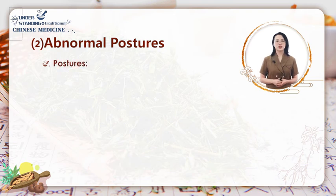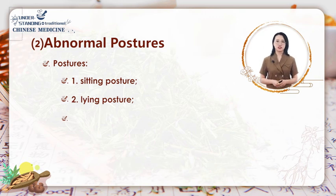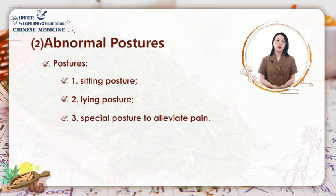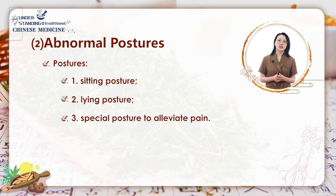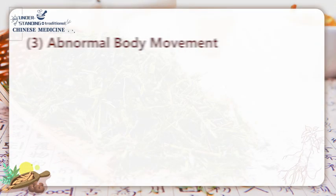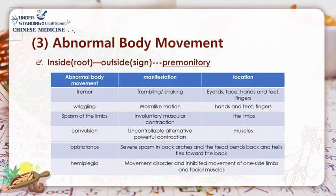Healthy people are featured by free and coordinated movement and natural postures. But in some diseases, there may be certain fixed postures, which should be viewed as the external reflection of the disease. For the TCM practitioner, the eyes should focus on three aspects: first, sitting posture; second, lying posture; third, special postures adopted to alleviate pain. Observing these abnormal postures and movements will contribute to the diagnosis of both the nature and location of the disease. As a result of certain illnesses, some special positions or movements will be found in some patients.